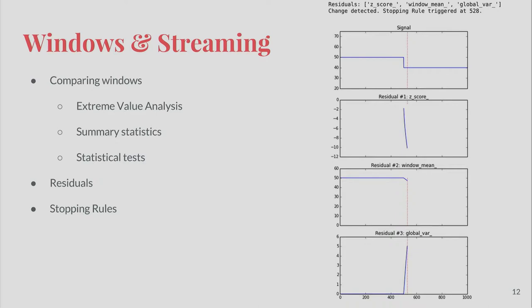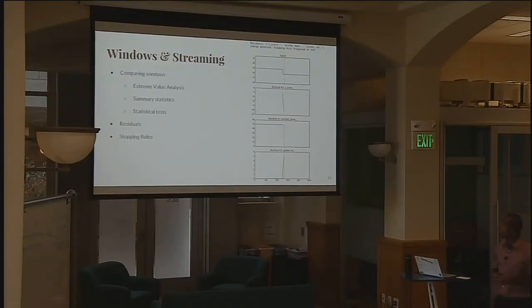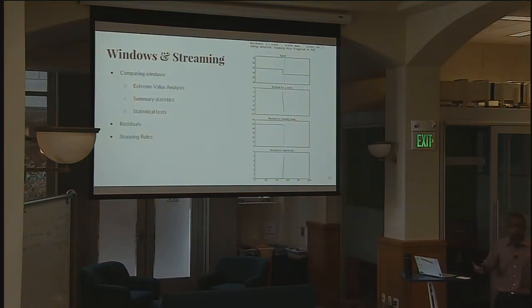Here's an example where extreme value analysis comes in handy — a signal shown in the top there which changes mean at some point. The detection is done by constructing a global window calculating mean and standard deviation at every new incoming point in a streaming problem. We also have a local window of maybe the last 10 points, and we compare the mean and standard deviation in the window with the global. If there's a significant difference, it suggests something different is happening in that window versus the global population of data. This is a change detection problem, which is a subset of anomaly detection.